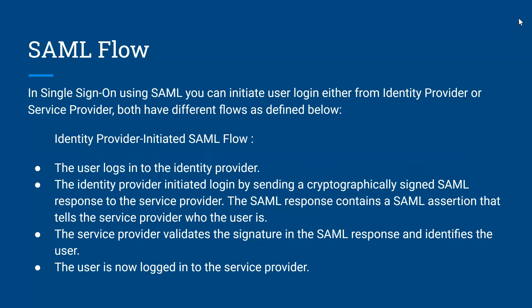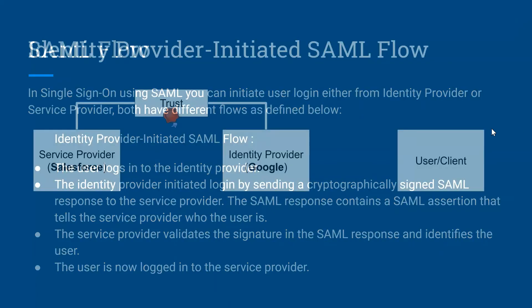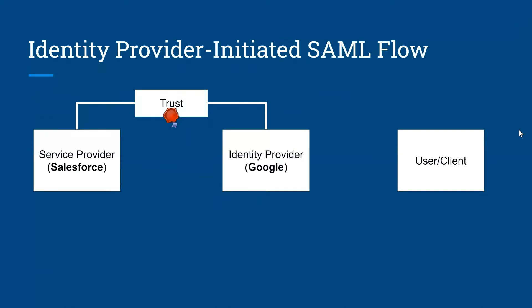So let's visualize the flow. In this flow, we can see that we have the user, identity provider, service provider, and a trust. I'm taking this flow with an example where for the identity provider I'm using Google, and for the service provider I'm using Salesforce.